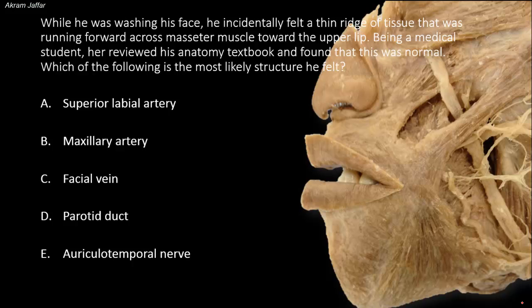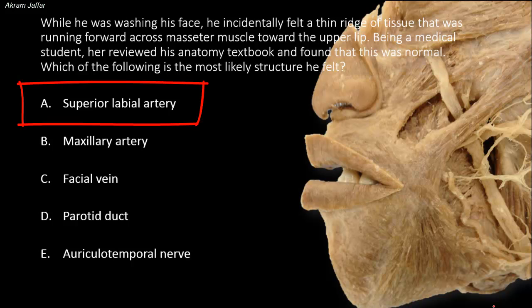While he was washing his face, he incidentally felt a thin ridge of tissue that was running forward across the masseter muscle toward the upper lip. Being a medical student, he reviewed his anatomy textbook and found that this was normal. Which of the following is the most likely structure he felt? The first option is the superior labial artery.